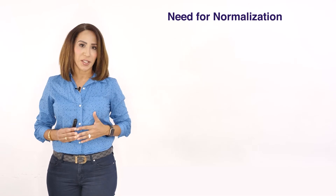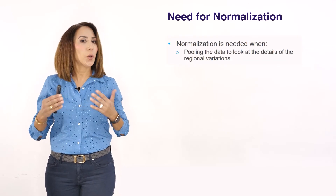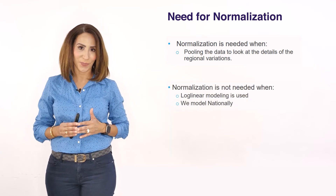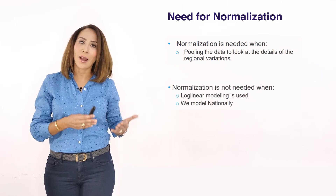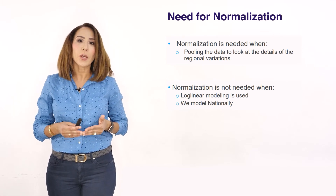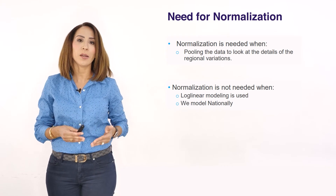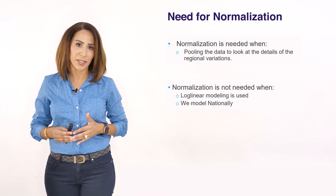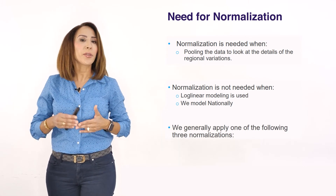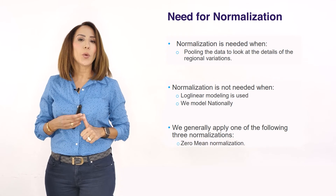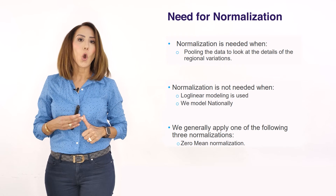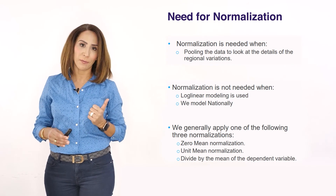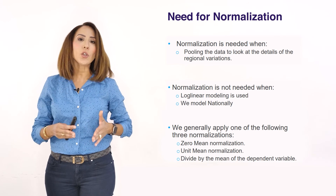When is normalization needed? If you are pooling your data to look at regional variations, in most cases you will need to normalize. However, if you are using log-linear, you probably won't need to normalize because the data will already be normalized through the log-linear transformation. If you are running national models, you also probably won't need to normalize. There are three normalization options: subtract the variable's mean from it, divide it by its mean, or divide the variable by the mean of the dependent variable. More details will follow in a dedicated course on pooled regression.